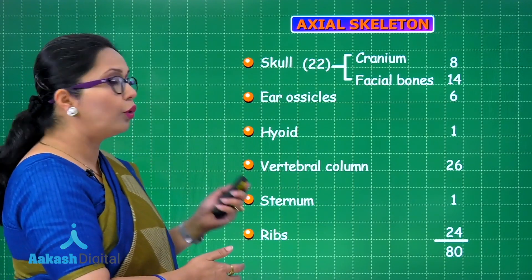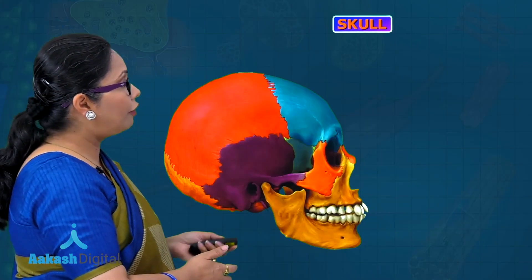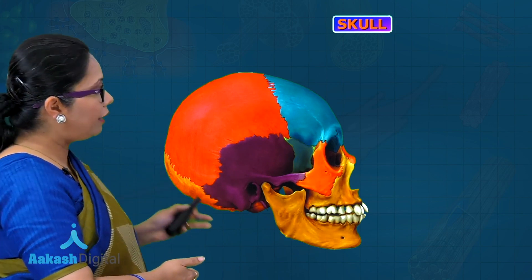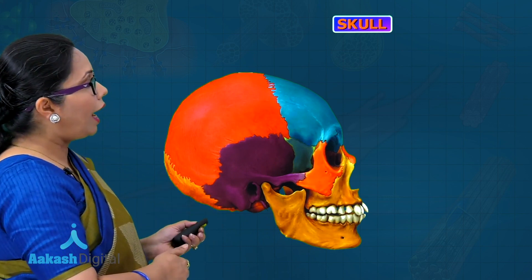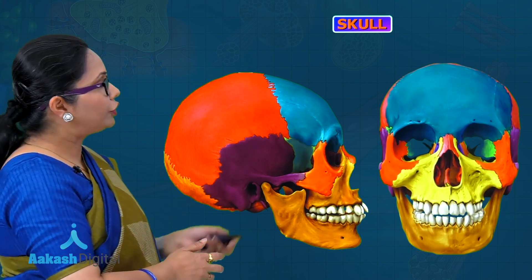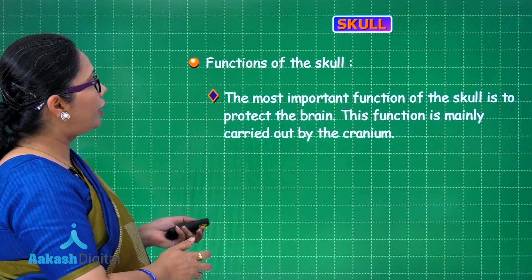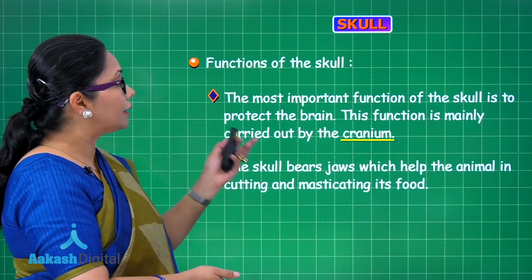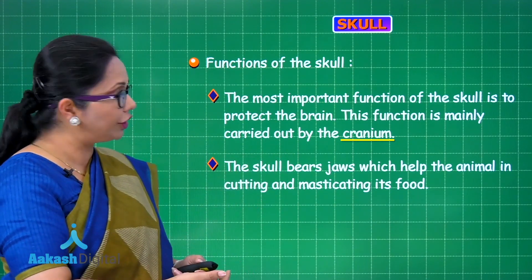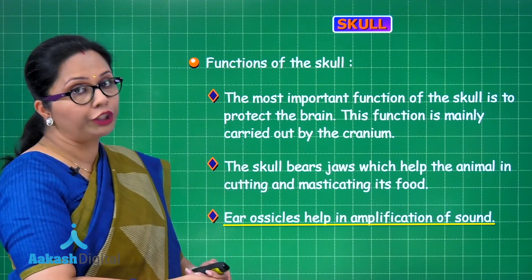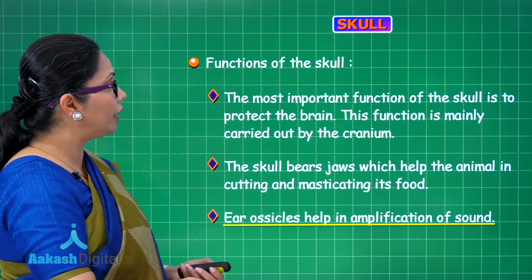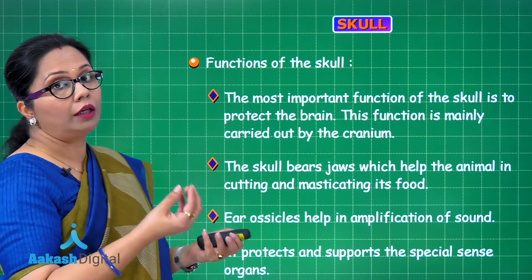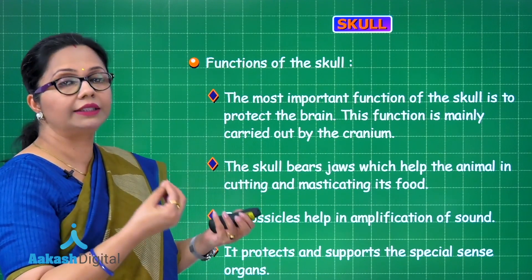Looking at the skull from the side view and the front view, its most important function is to protect the brain, done by the cranium or brain box. The skull bears the jaws, which help in cutting and masticating food. Ear ossicles help in the amplification of sound so that sound waves can move from outside to the internal ear. The skull also protects and supports the special sense organs — the internal ear, olfactory membrane, and eyes.